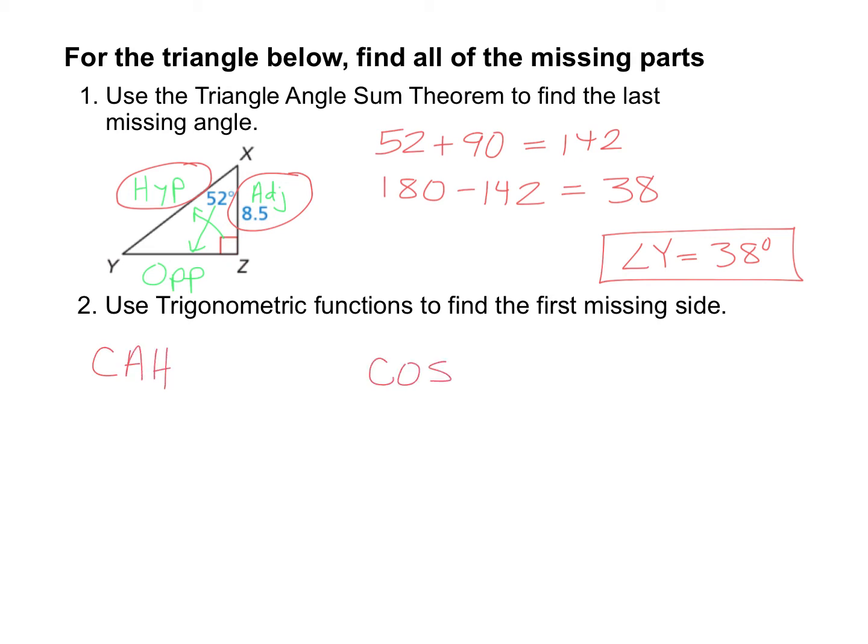The cosine of 52 degrees is equal to the adjacent, which is 8.5, divided by the hypotenuse, that's side XY.